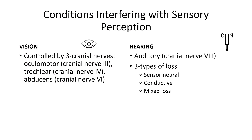Vision has various conditions that interfere with sensory perception. Key terms include myopia, hyperopia, astigmatism, and presbyopia – these are all various conditions that can interfere with one's vision.